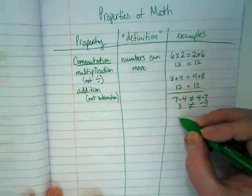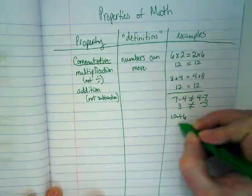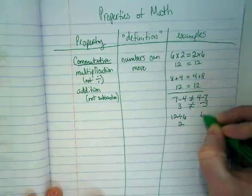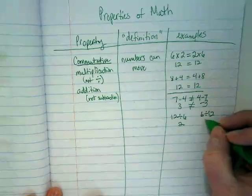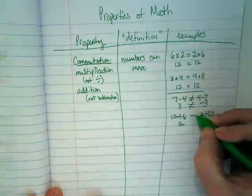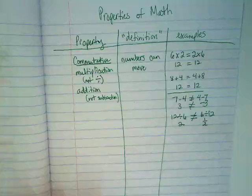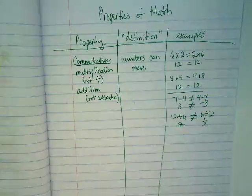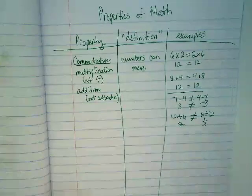Just really quickly, the example we use for showing it does not work with division: 12÷6 equals 2, but 6÷12 equals 1/2. These do not equal each other. So moving numbers in a problem only works with addition and multiplication, not their inverses.